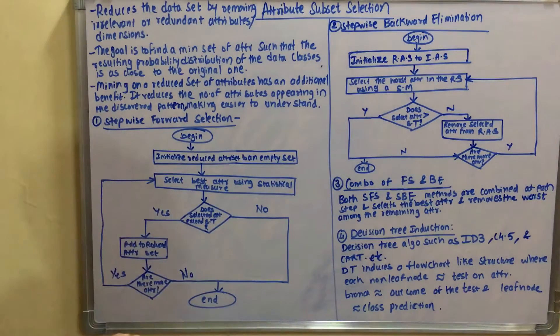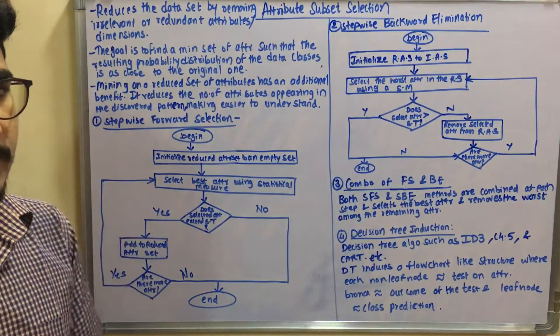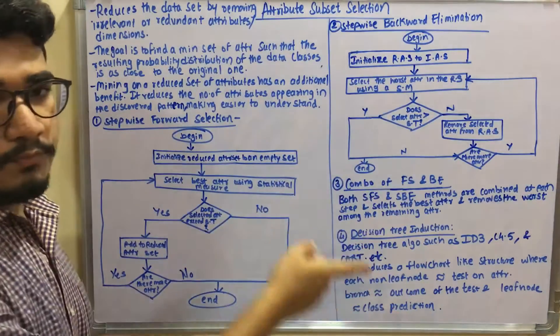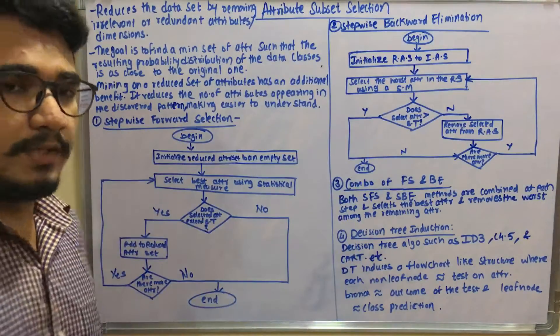For attribute subset selection, you have four different steps. The first is stepwise forward selection. You have stepwise backward elimination. You have combination of stepwise forward selection and stepwise backward elimination, and you have decision tree induction.